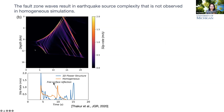In earthquake cycle simulations, the slip rate function shows a lot of oscillations just after the rupture front. Looking at a cross-section of the slip rate, these oscillations are associated with reflections inside the fault zone. When reflections with positive stress perturbations arrive, they accelerate the fault slightly; when reflections with negative stress perturbations arrive, they can heal the slip rate function.